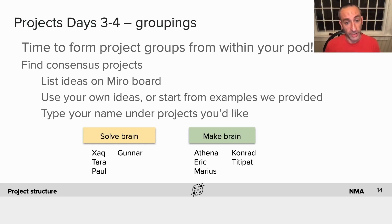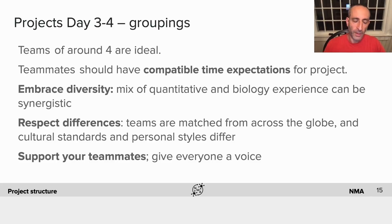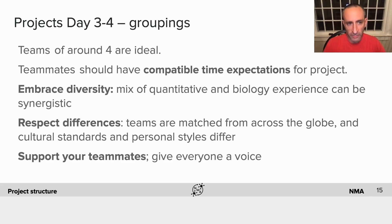Everyone will be moving their names around — that's how you self-organize into different teams. Teams of about four are what we've found to be ideal, so you should aim for that. You should also make sure that expectations are communicated clearly — people in your team should have compatible expectations of how much time you're going to dedicate to the project. People are going to have different perspectives, and that's a good thing. You want to embrace diversity. You'll probably have a mix of people with more quantitative or more biological experience, and that can really be helpful.